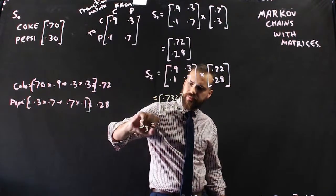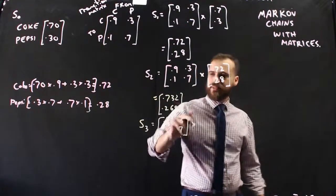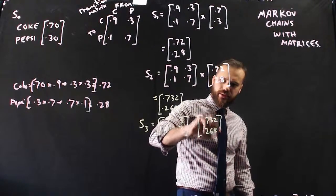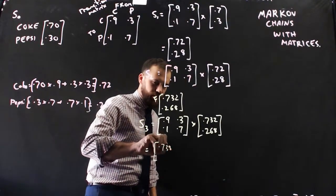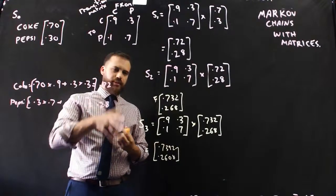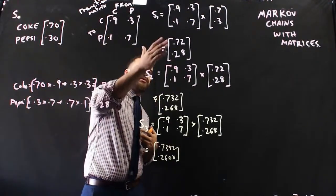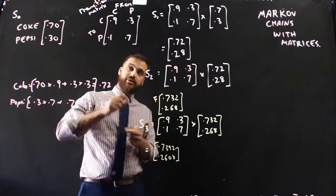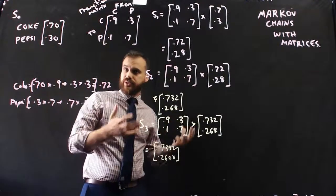Let's look at the third state here. 0.9, 0.1, 0.3, 0.7 times state 2, 0.732, 0.268. Calculator, and let's see what answer we get. And we're getting 0.7392, 0.2608. Let's take a look at what's happened to the Coke share over the last four months. Started at 0.7, went to 0.72, 0.732, 0.7392. It's increasing, but the rate of increase is slowing down. 0.02, 0.012, 0.007, something like that.